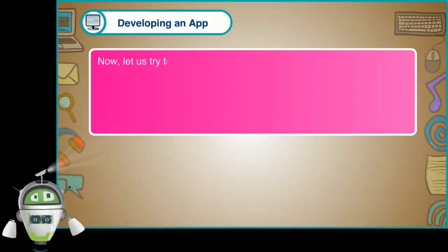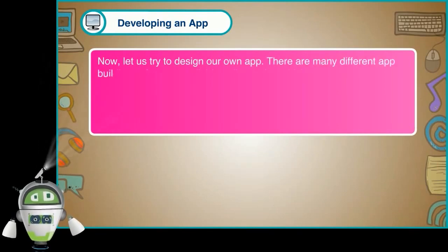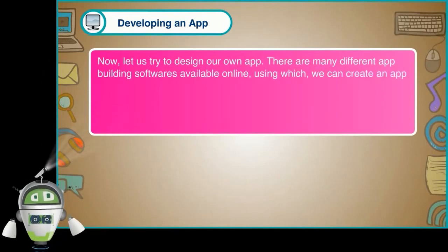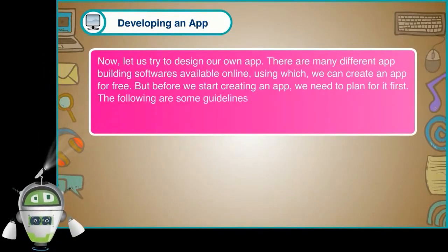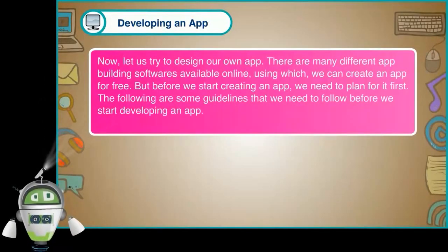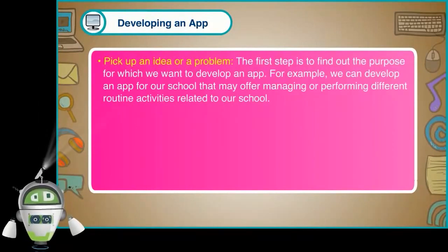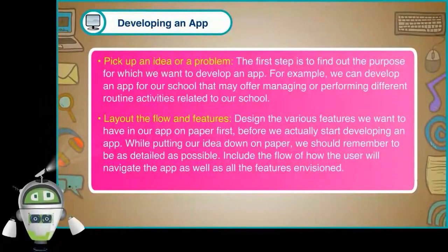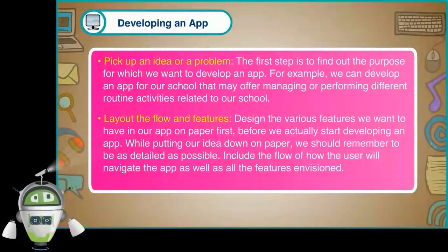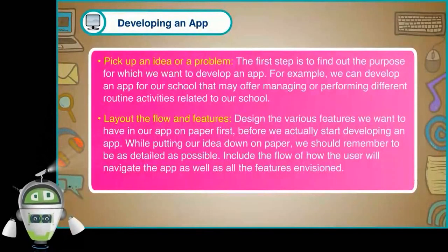Developing an app. There are many different app building softwares available online using which we can create an app for free. But before we start creating an app, we need to plan for it first. The following are some guidelines to follow before developing an app. First, pick up an idea or a problem — find out the purpose for which we want to develop an app. For example, we can develop an app for our school that may offer managing or performing different routine activities. Second, lay out the flow and features — design the various features on paper first before actually starting to develop. While putting the idea down on paper, be as detailed as possible. Include the flow of how the user will navigate the app as well as all the features envisioned.